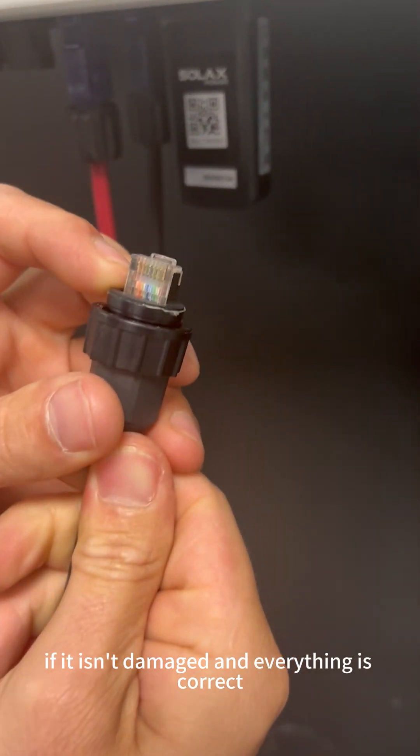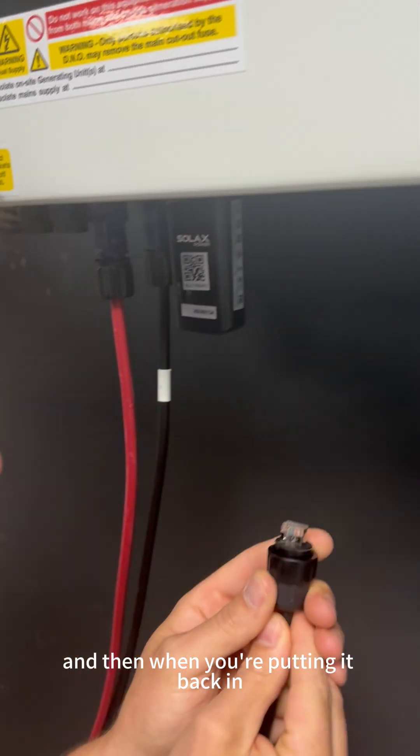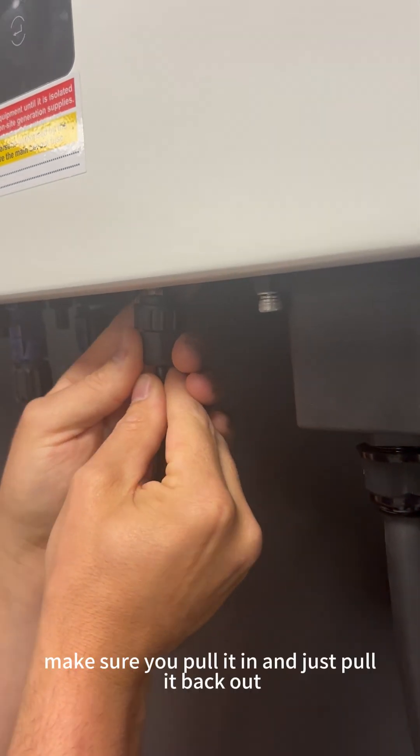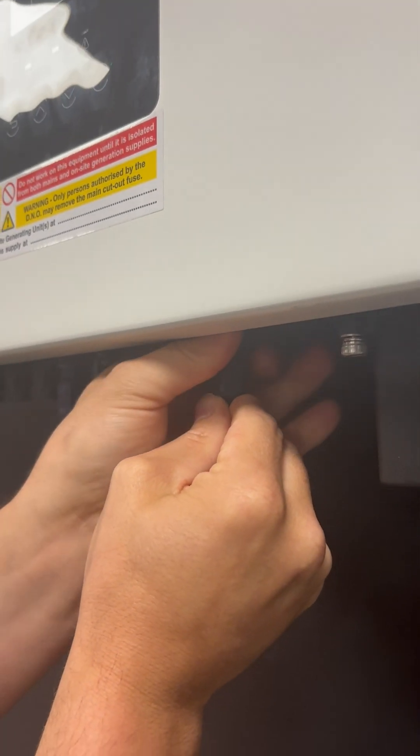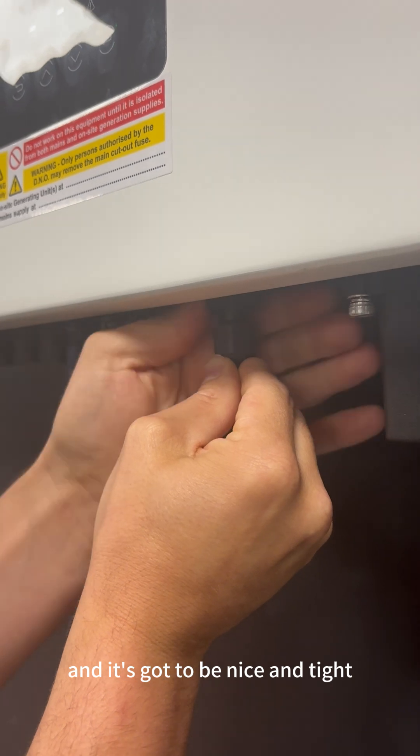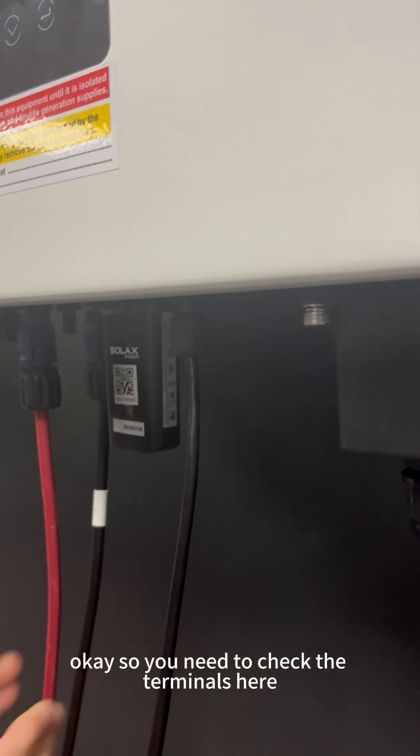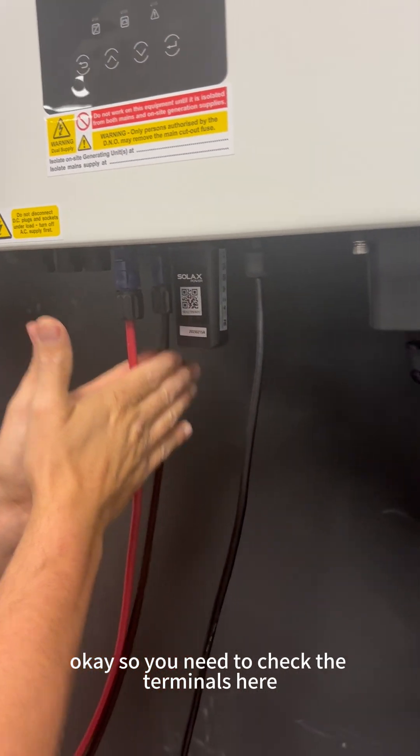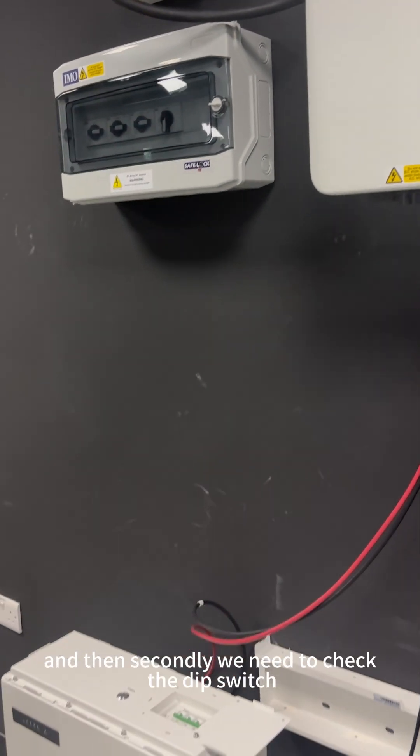You need to check if it isn't damaged and everything is correct. When you're putting it back in, make sure you pull it out and push it back in and it's got to be nice and tight so it can talk to the batteries. You need to check the terminals here and you need to check the BMS here. Secondly, we need to check the dip switch.